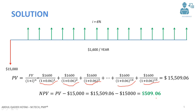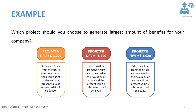Since this value is positive, it means that it's a profitable project. In the next question: which project should you choose to generate the largest amount of benefits for your company? Project A has an NPV of $1,000, Project B has an NPV of minus $790, and Project C has an NPV of $1,020. The higher the NPV, the more profitable the project is, so you will select Project C.